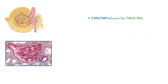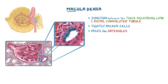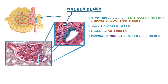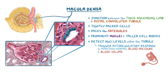At the junction between the thick ascending limb and the distal convoluted tubule is a portion of the tubule with tightly packed cells that face the arterioles entering the glomerulus. This area is called the macula densa. The cells here often have prominent nuclei and taller cell bodies, and are able to detect changes in sodium chloride levels within the tubule. This allows them to trigger an auto-regulatory response to help maintain normal blood pressure and blood volume by increasing or decreasing the amount of water and ions the kidney reabsorbs.